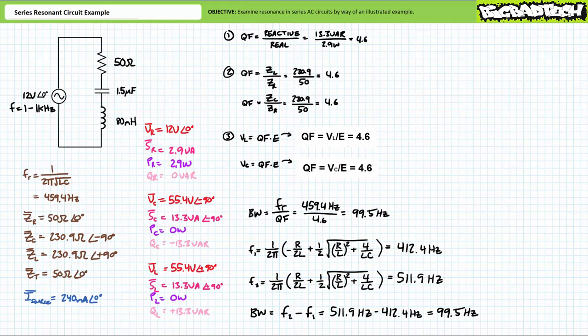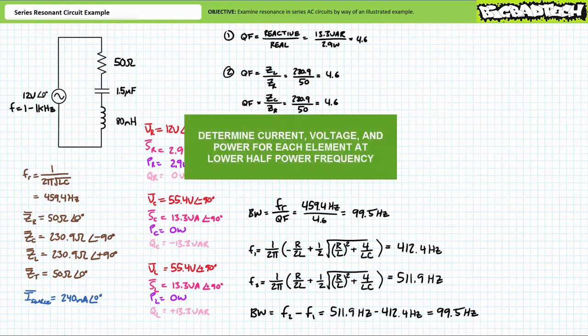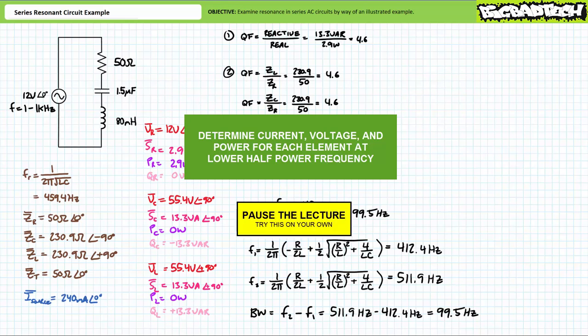See if we can determine the electrical properties of this circuit at the lower half power frequency, in this case 412.4 hertz. Specifically, see if you can solve for the source current, the voltage across each element, and the apparent real and reactive power experienced by each element at the reduced excitation frequency of 412.4 hertz. You should anticipate some predictable results — notably, source current will be maximum current divided by the square root of two, and real power delivery will be half, hence the name half power. By all means pause the lecture and try this on your own. If you're tracking, you should obtain the following results.